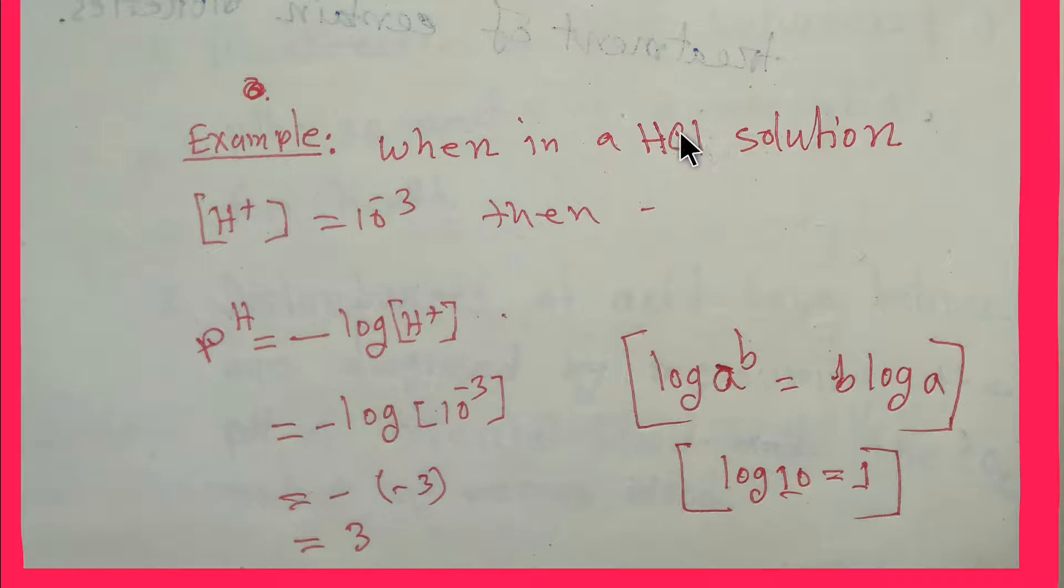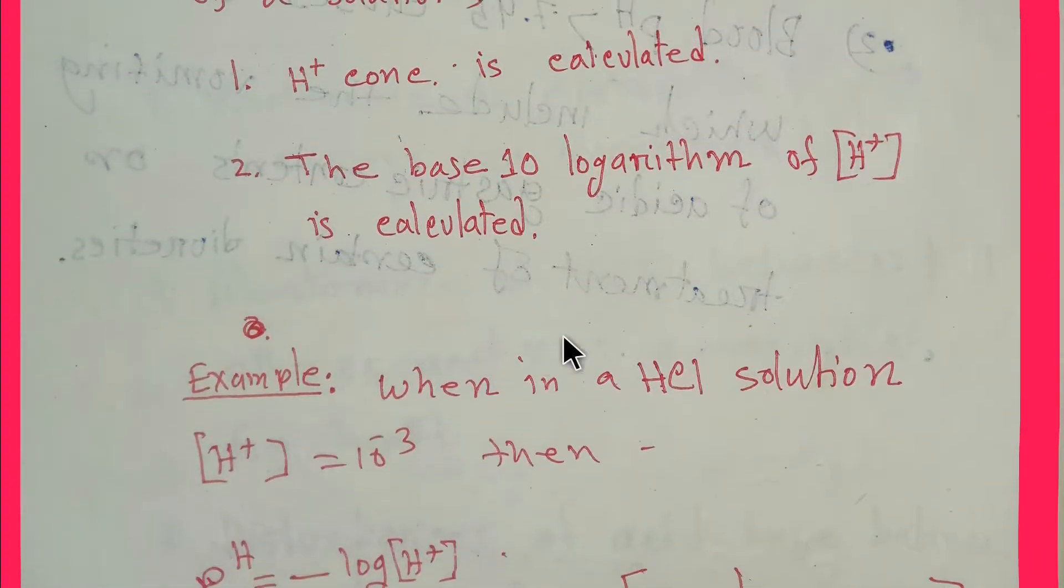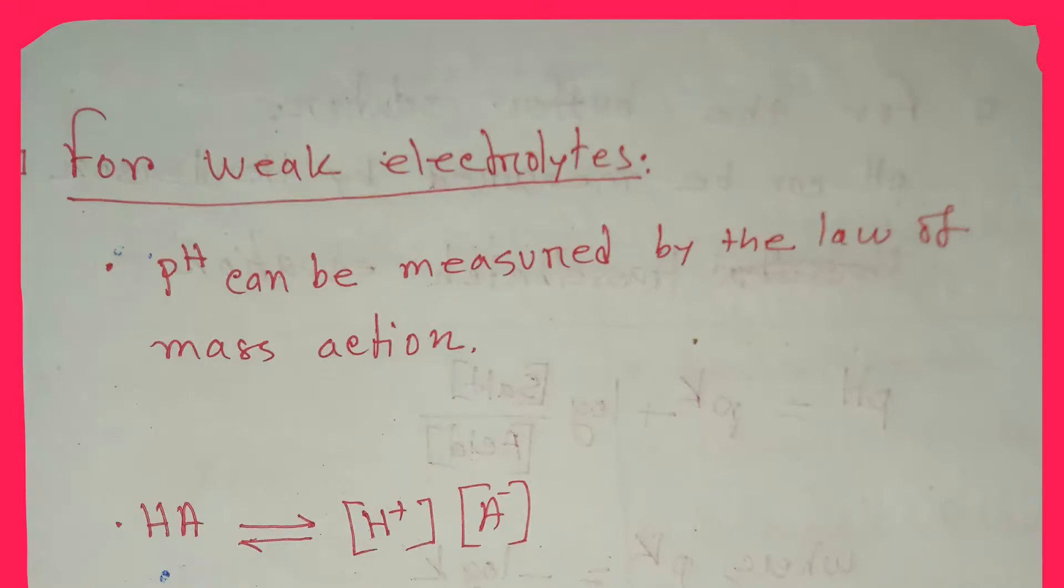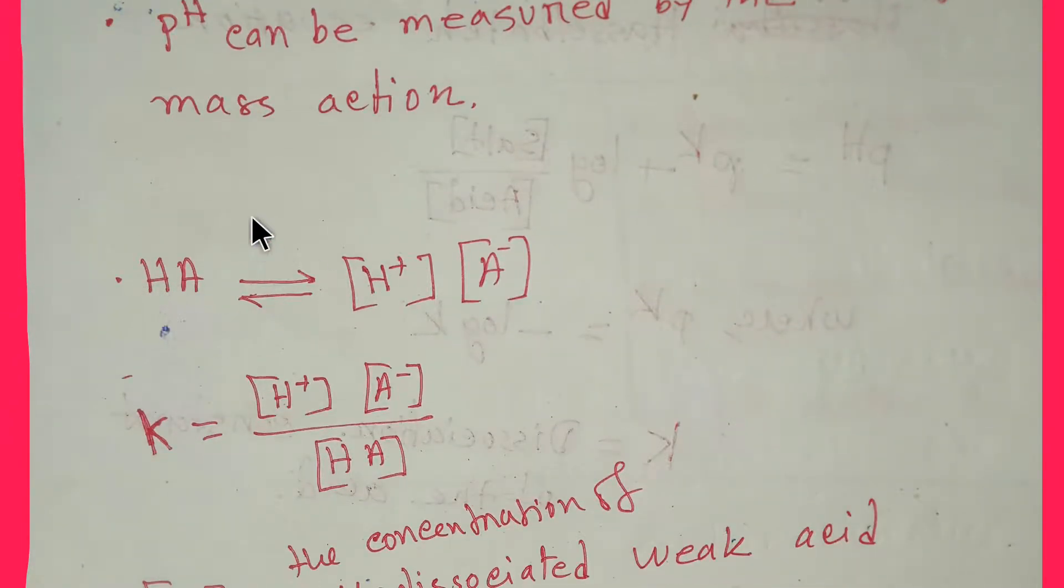For weak electrolytes, to measure the pH of a solution, we have to adopt the law of mass action. Suppose this is a weak electrolyte and it dissociates in water partially and equilibrium is established between this and this.